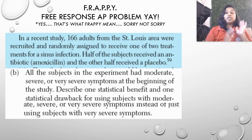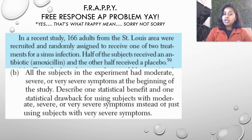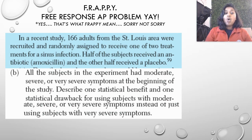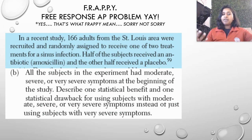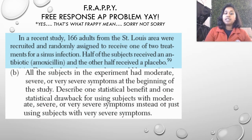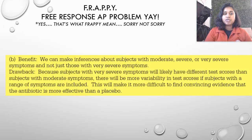Same concept — looking at question B. All the subjects in the experiment had moderate, severe, or very severe symptoms from the very beginning of the study. Describe one benefit and one drawback for using subjects with moderate, severe, or very severe symptoms versus just using subjects with very severe symptoms. Your answers might be a little different, but here are the two answers.